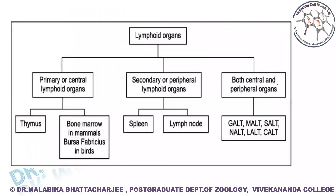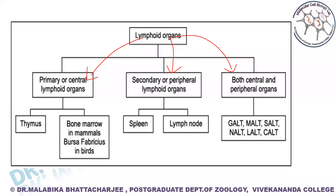When we are talking about the lymphoid organs, they can be basically divided into the primary lymphoid organs, or the central lymphoid organs, and the secondary lymphoid organs. And then we have a tertiary or peripheral lymphoid organs. These are the very simplified basic divisions of the different categories of lymphoid organs.